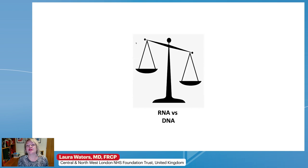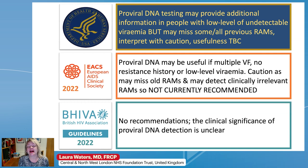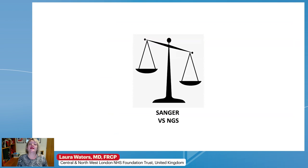RNA or DNA: typically we sequence RNA in people with detectable plasma viral loads, but there's increasing evidence for DNA — proviral or intracellular genetic material — for people with low or undetectable viral loads. The guidelines say there's a lack of evidence for proviral DNA testing; it might provide some additional information but might miss historic resistance. EAC specifies it may also detect clinically irrelevant resistance mutations and is very clear it's not currently recommended, and BEVA says the clinical significance is not clear at present.